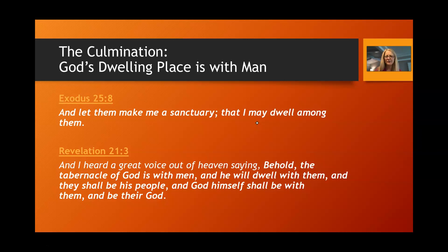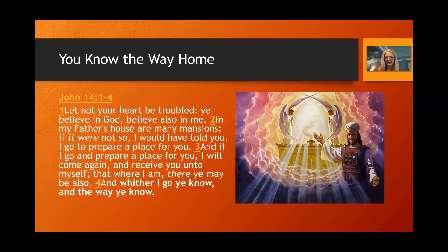This purpose — that God may dwell among us — is realized in Revelation 21:3, which says, 'And I heard a great voice out of heaven saying, Behold, the tabernacle of God is with men, and he will dwell with them, and they shall be his people, and God himself shall be with them and be their God.' So in Exodus, God says, 'Make me a humble tabernacle in the wilderness that I may dwell among you.' This is ultimately realized — at Christ's first coming he tabernacled among us, but in Revelation 21:3, after all things have been made new, the dwelling of God is with men and he will walk among them, be their God, and they shall be his people.